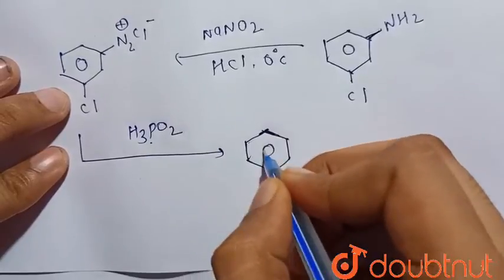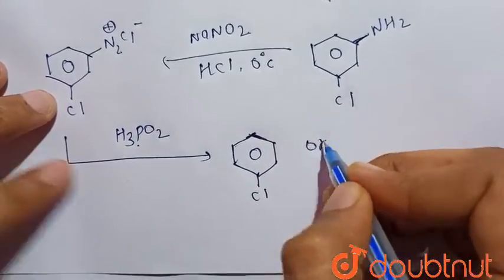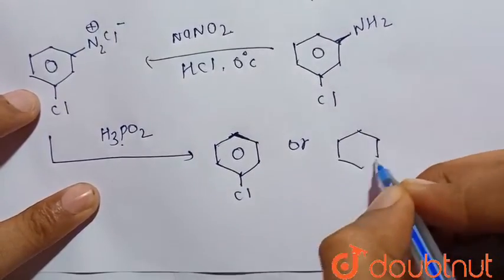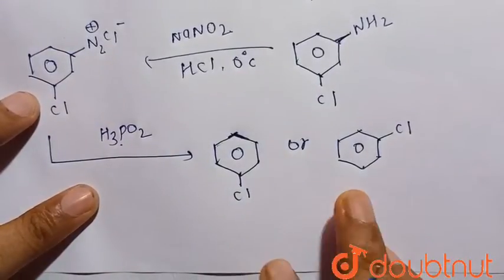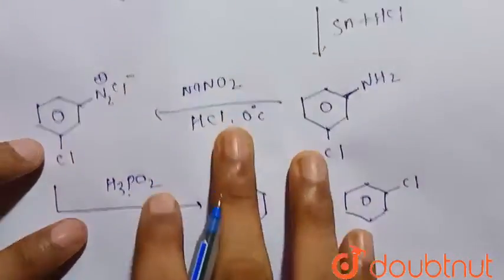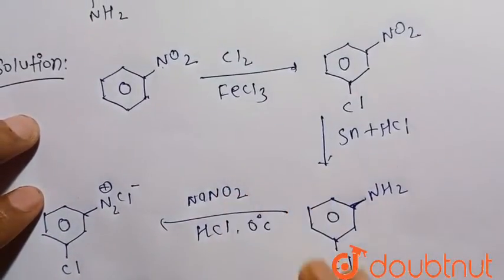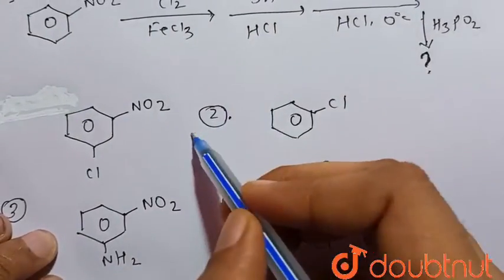Chlorobenzene, or we can clearly write as given in the option, chlorobenzene. So the final product is chlorobenzene. Now consider the given options. It is given in option number 2, that is chlorobenzene. Hence, option 2 would be the right choice.